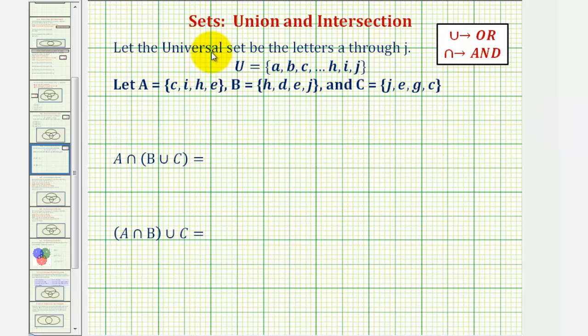In this example, we're given the universal set contains the lowercase letters A through J with subsets A, B, and C. We want to determine the elements in the sets given here below.